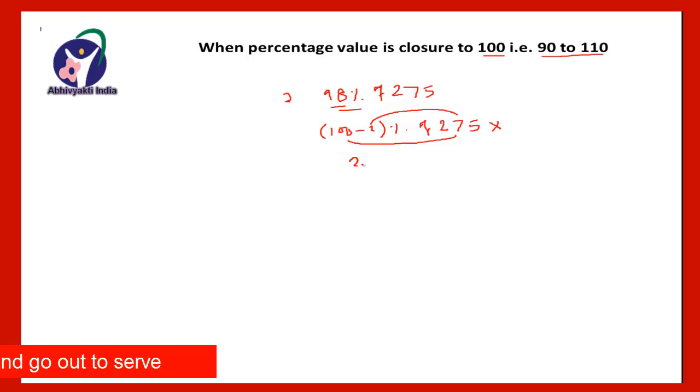It's very easy. 100% of 275 is of course 275 minus 2% of 275. Just multiply by 2 to 275. It means double of 275, that will be equal to 550, and put a decimal point after 2 digits. So it will be 5.50. 275 minus 5.50 will give you the answer, that is 269.5.